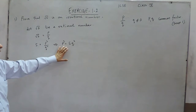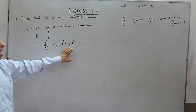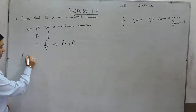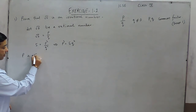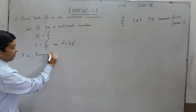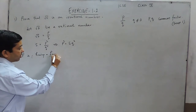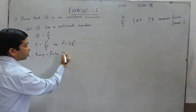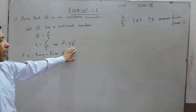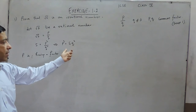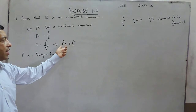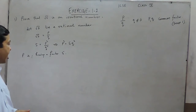So now it is very clear that P must be having a factor of 5, because when P² is equal to 5Q², then 5Q² is divisible by 5, or 5 divides 5Q². The same way, 5 divides P² as well.